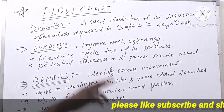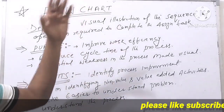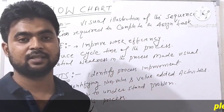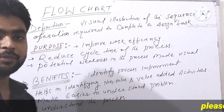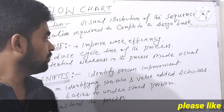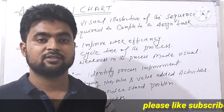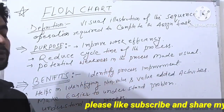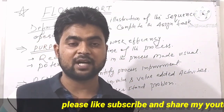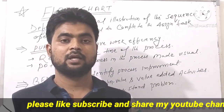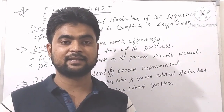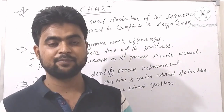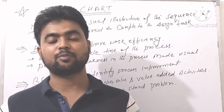After that we will know what is the purpose of using flowcharts. First point is improve work efficiency — we use flowcharts to improve work. Second point is reduce cycle time of the process. The main purpose of the flowchart is how to reduce the cycle time from the process — which process is extra and where we are giving more time — so we can calculate and reduce the cycle time from the process.